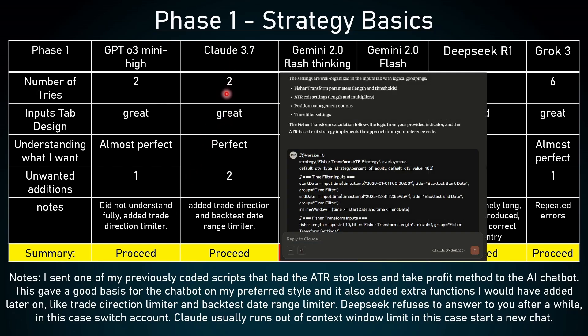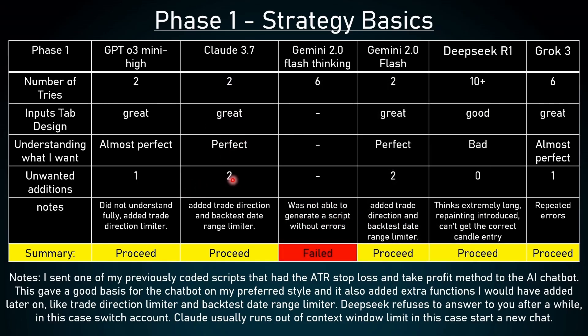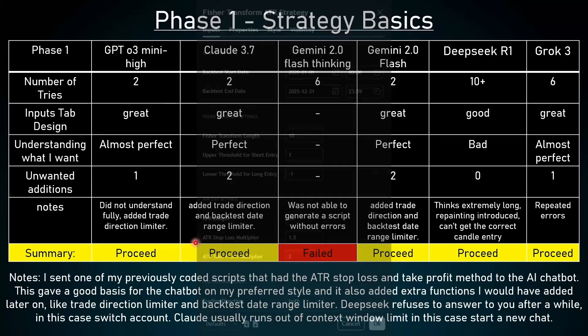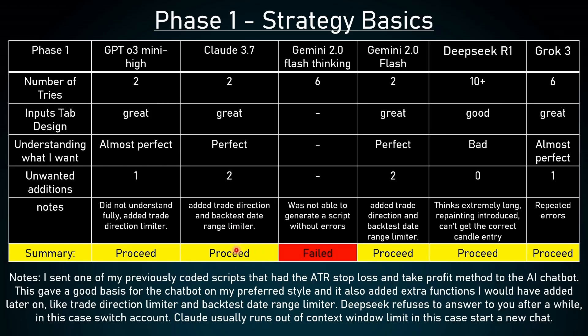With Claude 3.7, it also took only two tries, which is perfect. The input step design was also great. It instantly understood what I wanted. But we had two unwanted additions: it added the direction and the backtest date range limiter. I did not ask for either of these, but it's not a big deal — we can remove them later, and these are good features to have. So in conclusion, it proceeds.